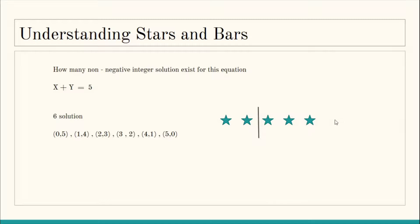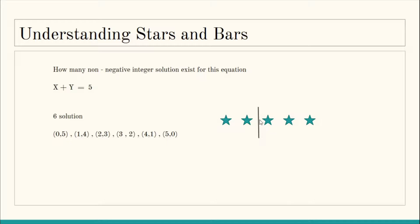There are five stars because the value of n is five, and we have to distribute these five stars among the variables. There are two variables, so we need two minus one, that is one bar. You can think of it like a stick: if you cut the stick k times, there would be k+1 strips left. Since we need to divide things into two parts, we only need one bar.